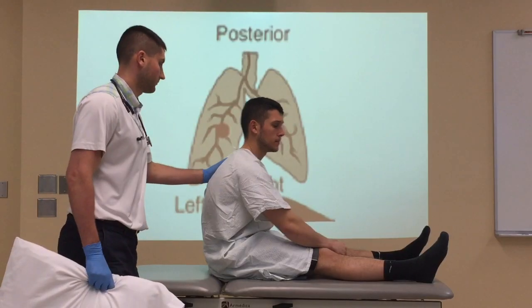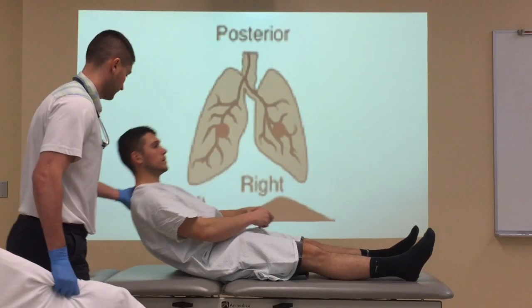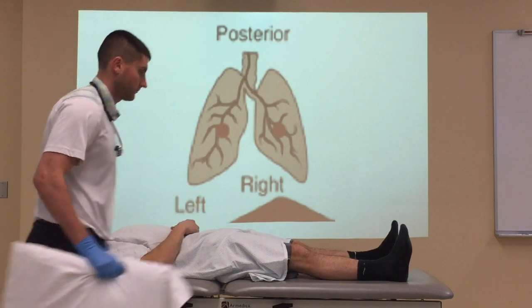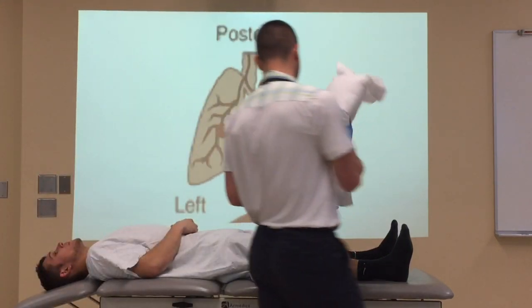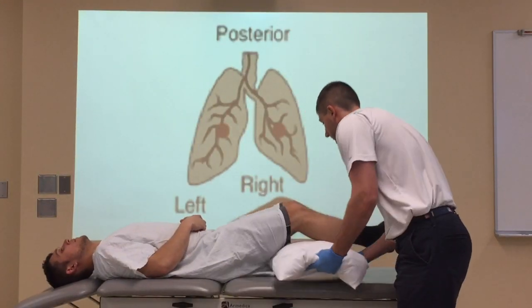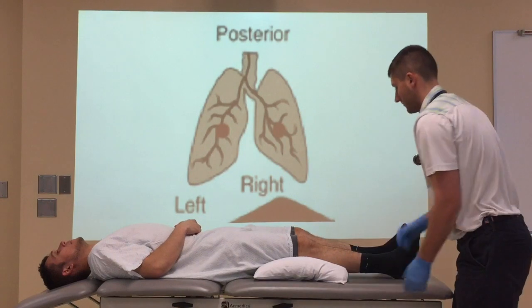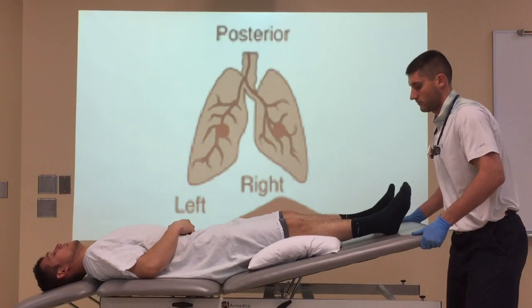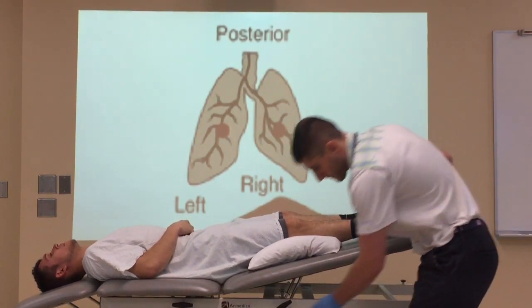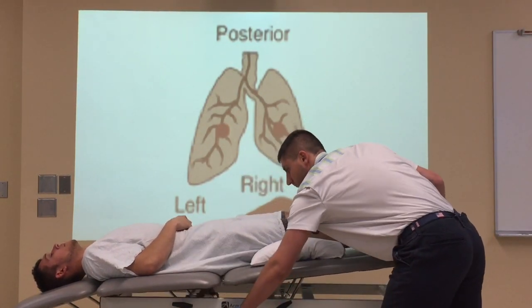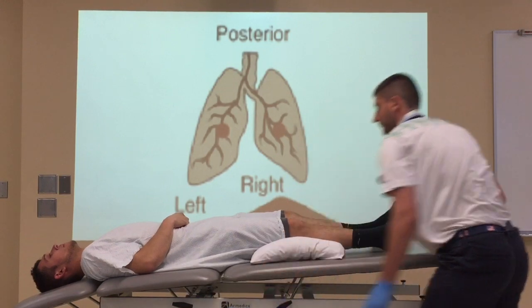For anterior lower lobes, your patient should be positioned supine with the table in 18 inches of Trendelenburg with pillows under the knees for comfort. Remember, this position is very high, so patients can be intolerant of it.